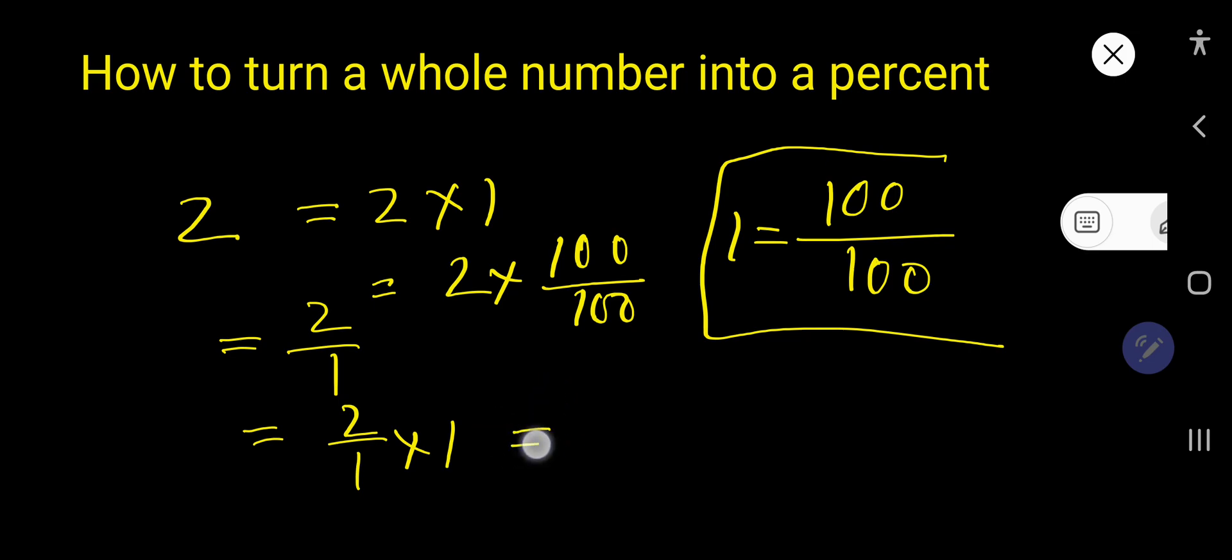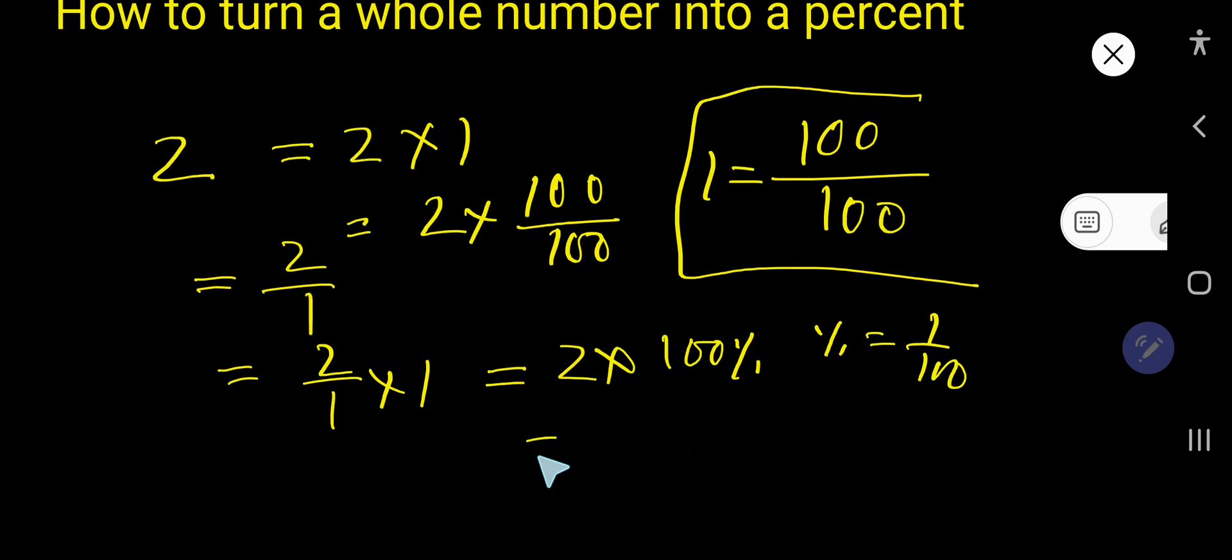So now we know that percent means 1 over 100. So 2 times 100, and this 100, 1 over 100 means percent. So basically we are getting here 200 percent.